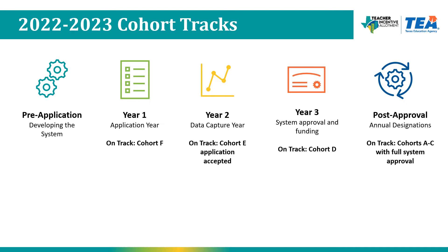Let's take a look at cohort tracks and where different districts are in 2022-2023. Cohorts G and beyond are still developing their local designation system and have not yet applied for TIA. Cohort F districts are in year one — their application year — scheduled to apply in spring 2023. Cohort E districts on track have an accepted application and are in year two, the data capture year. Cohort D districts are in year three, working towards system approval and their first year of designations and funding. Cohorts A through C with full system approval are in the post-approval phase where they can issue designations annually.